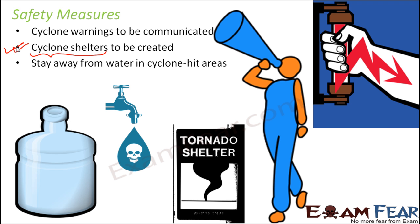Stay away from water in cyclone-hit areas. Wherever an area is being hit by a cyclone, it is also being hit by high tides of the sea, so flooding has already occurred there. A huge amount of water would have entered that region, because of which the water would have been contaminated. Drinking water should be stored beforehand so that people do not consume contaminated water and fall ill.